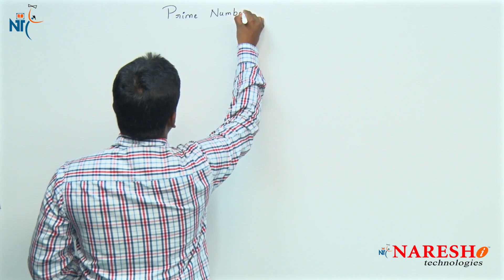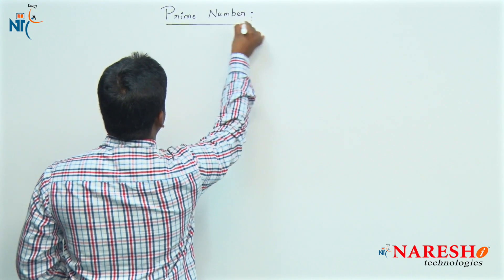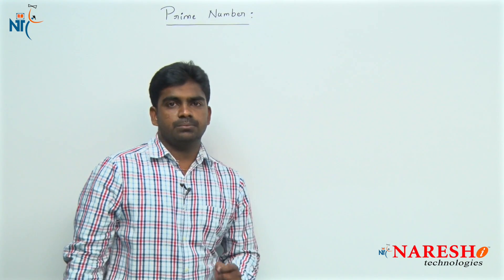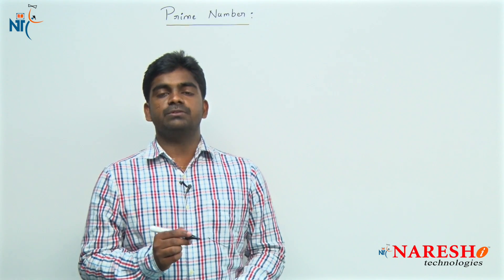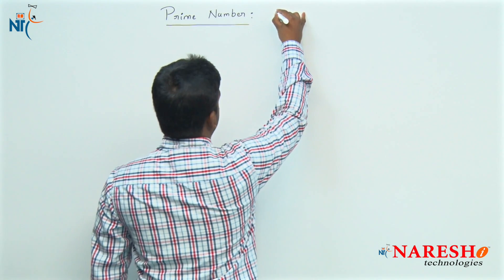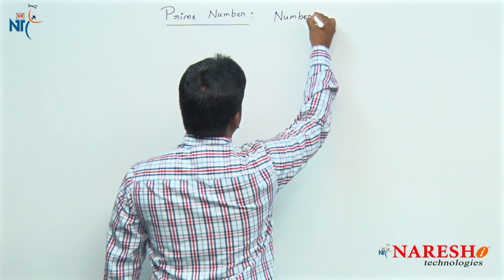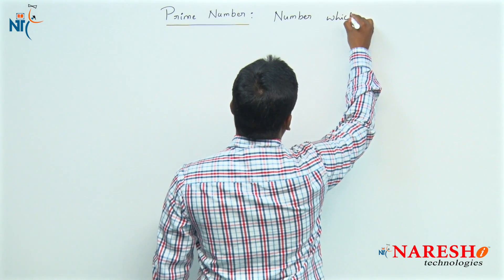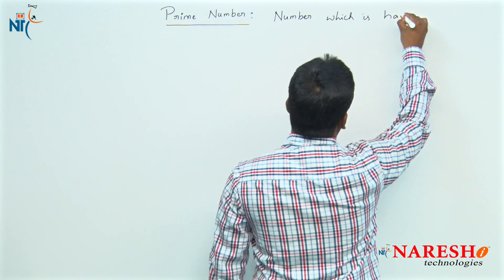First of all, what is a prime number? A prime number is a number which is having two factors.